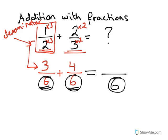Then it's pretty easy, because now I look at my top numbers and now I am supposed to add them. What is three plus four? Seven. So my answer to a half plus two-thirds is actually seven-sixths.